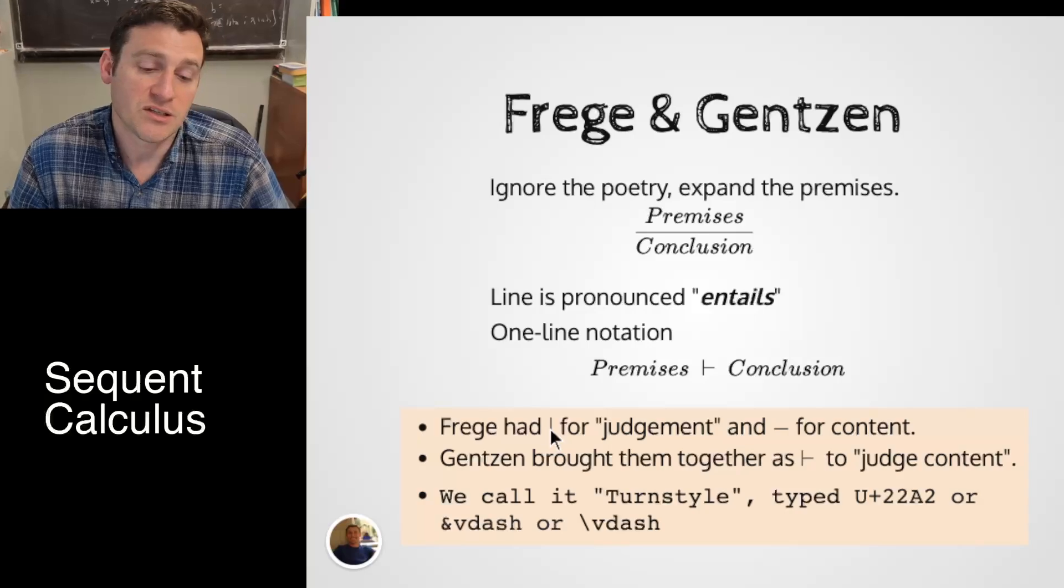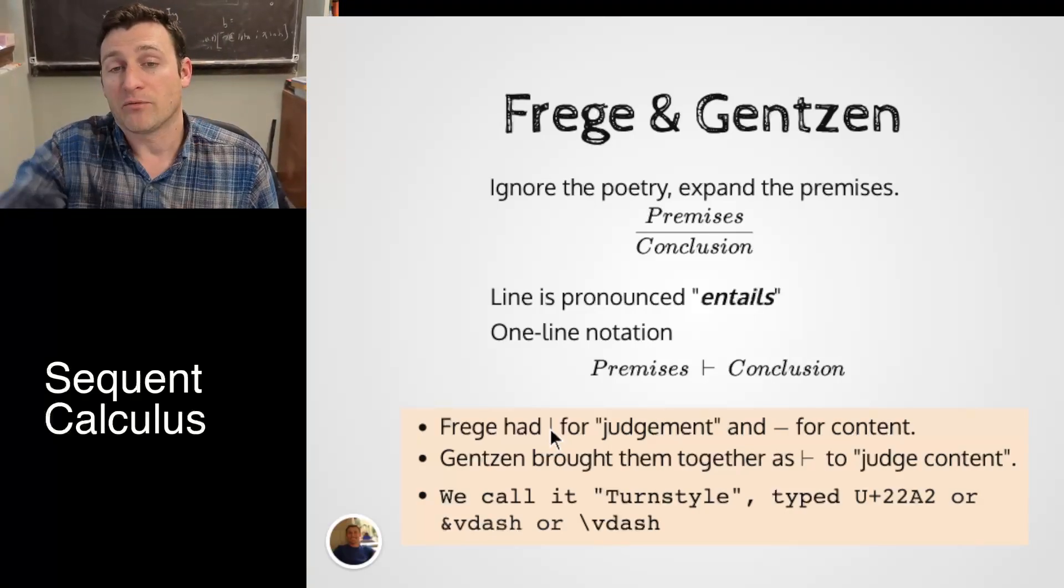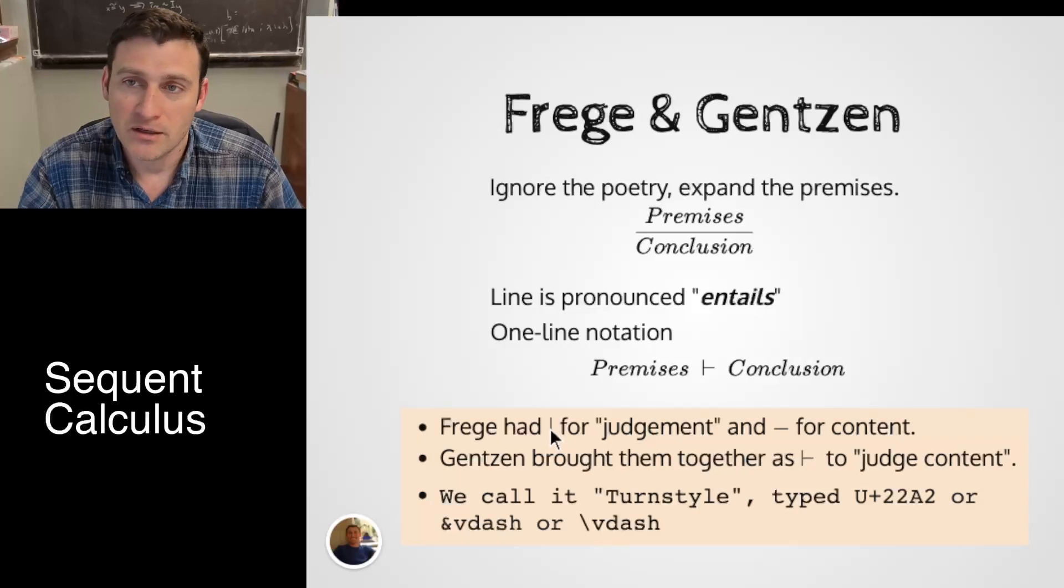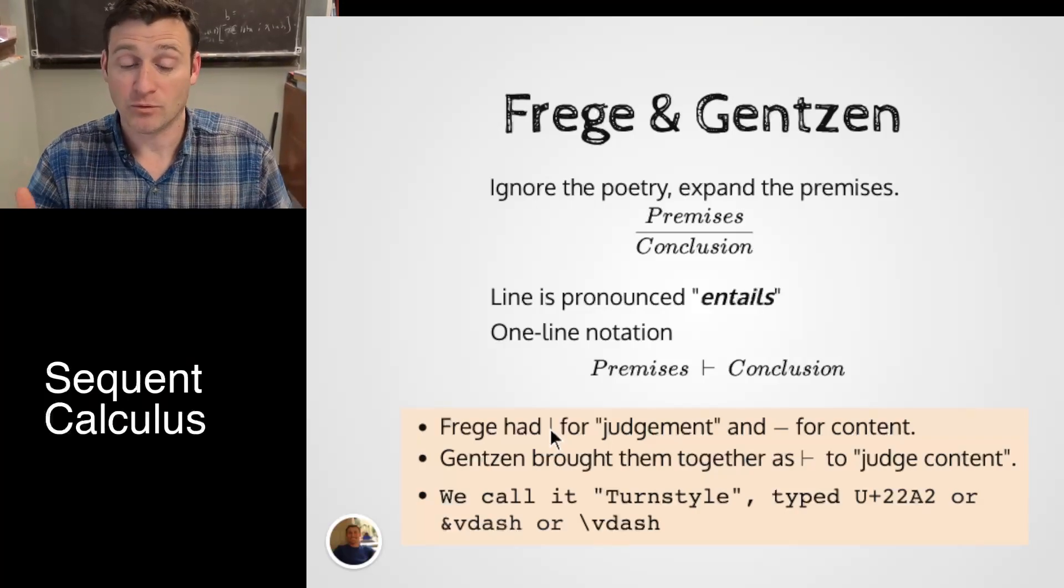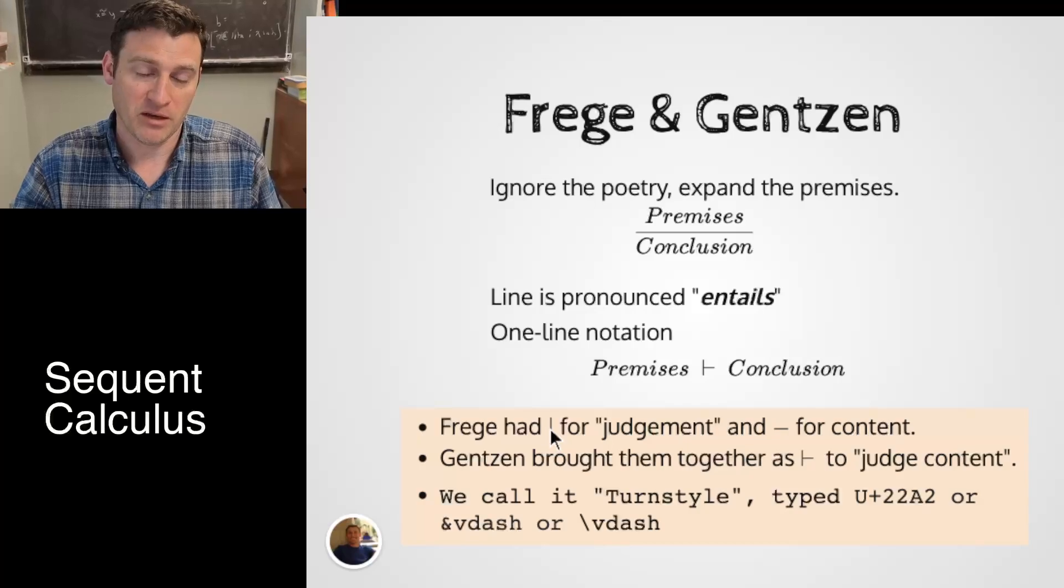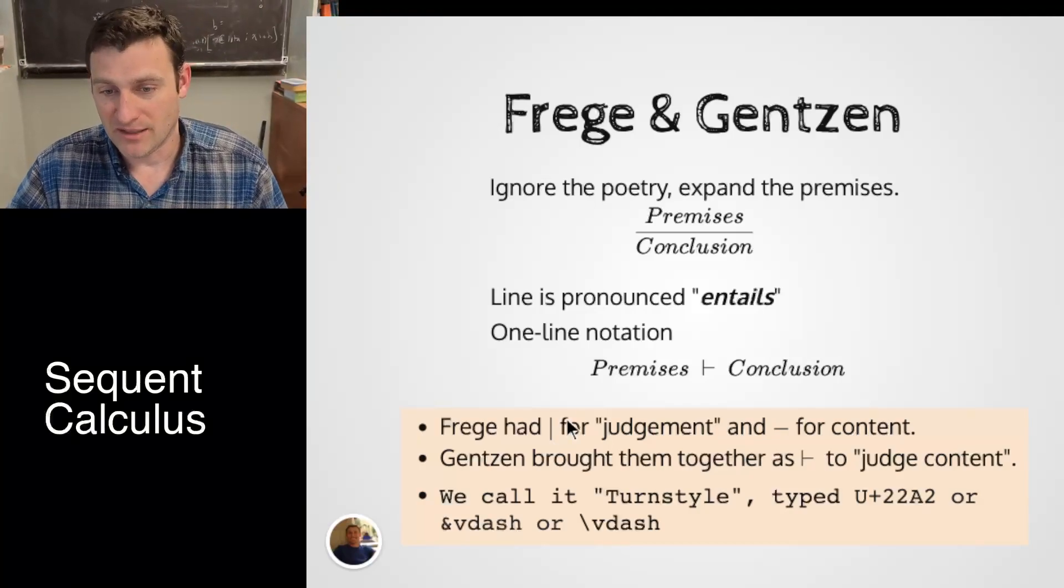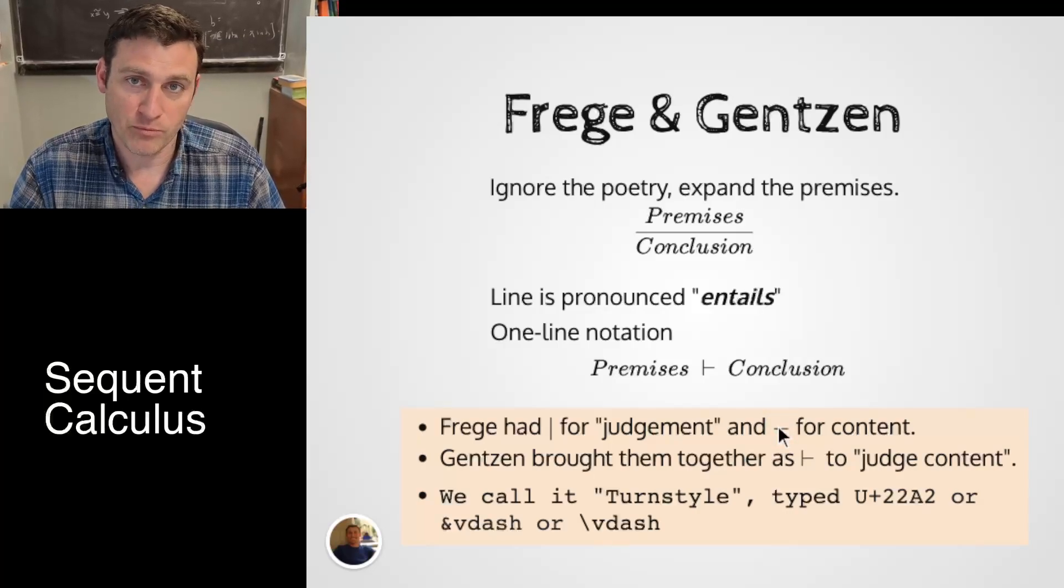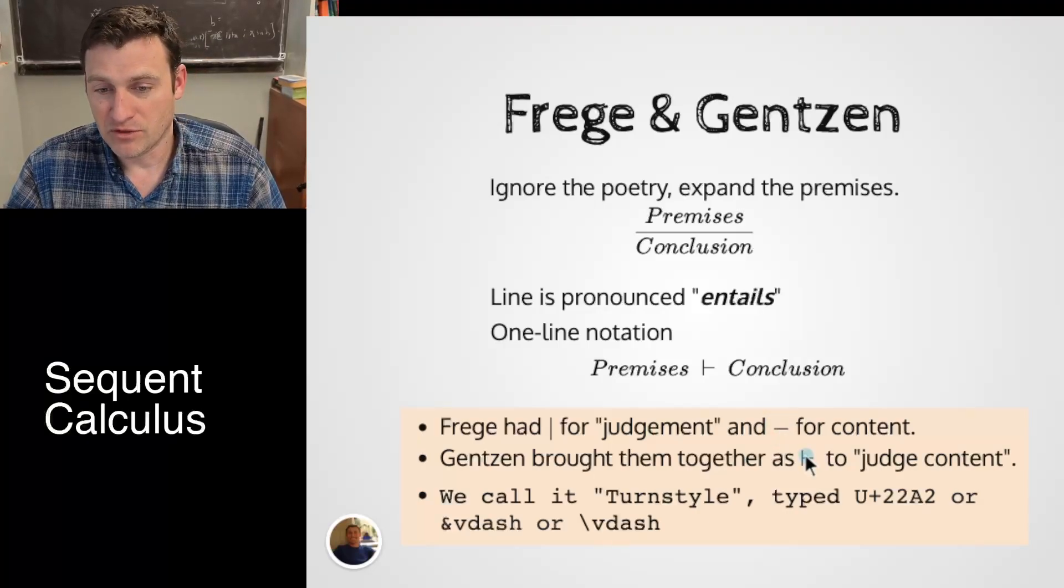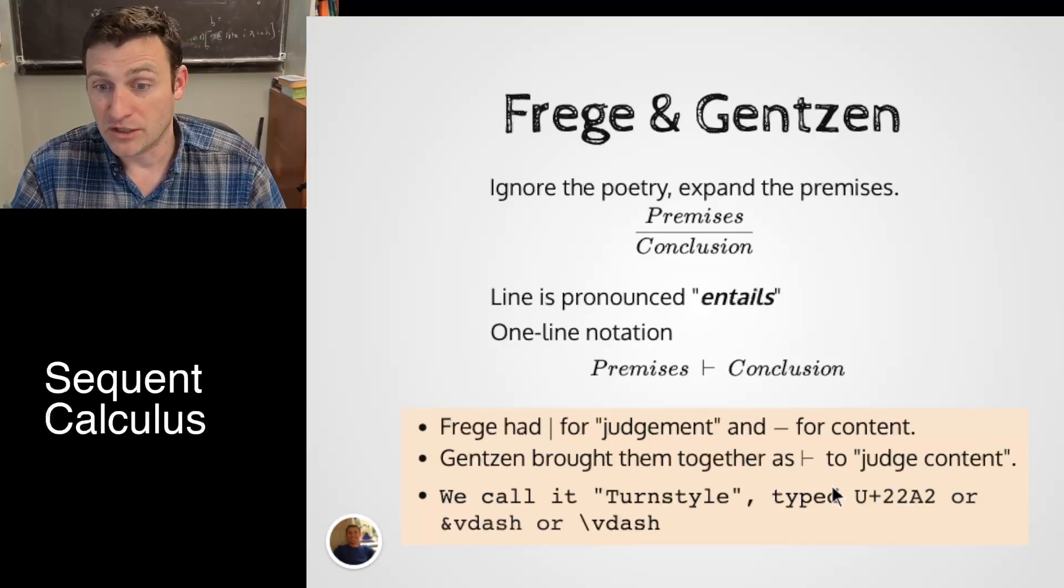This entails symbol is what's known as the turnstile. It comes from historically two words. One was the judgment. The vertical line was what Frege used to say, I want to judge this sentence right now. And then the horizontal line was to say, I want to judge its content. There's a very subtle point going on here. You could say I want to judge the actual words, but you might mean these words mean something and I want you to judge what they mean. That subtle change became less important as we moved into further forms of logic. And today they've been fused together as the single turnstile.